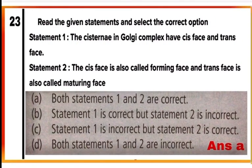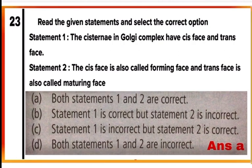Question 23: Read the given statements and select the correct option. Statement 1 — the cisternae in the Golgi complex have a cis phase and a trans phase — is correct. Statement 2 — the cis phase is also called the forming phase and the trans phase is also called the maturing phase — is also correct. Both statements 1 and 2 are correct; mark A as the correct answer.